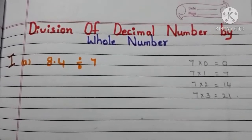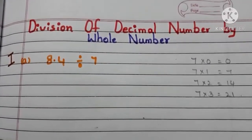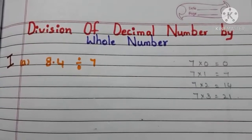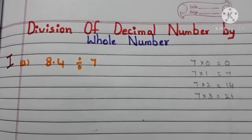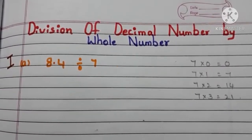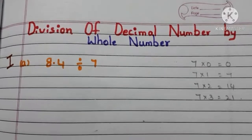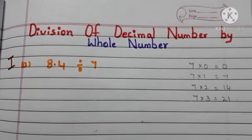Division of a decimal number by a whole number is the same as normal division. But in the quotient, we get the decimal point — meaning we get a decimal number as a quotient.